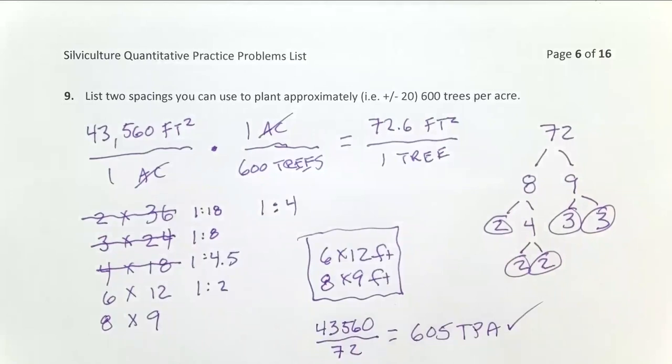So that's how you figure out what potential planning spacings you can use if you have a trees per acre that you want to target.